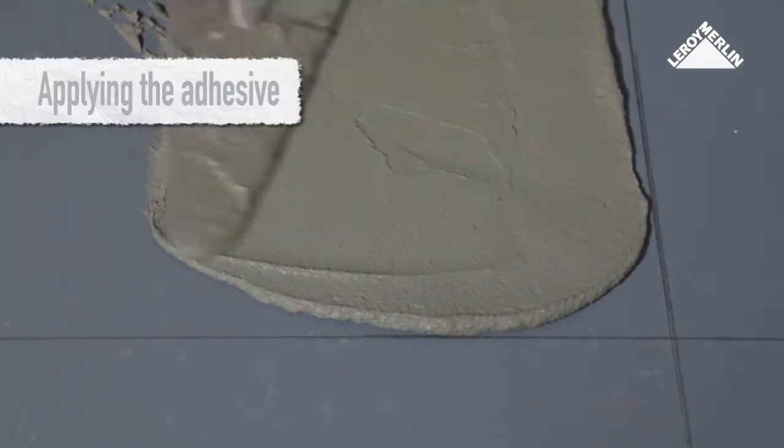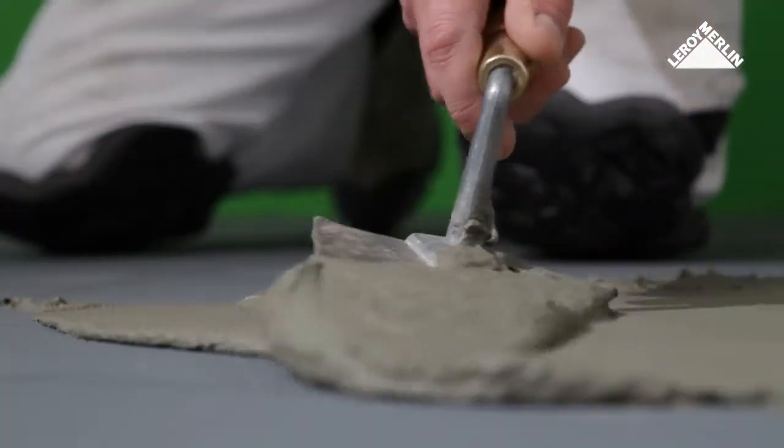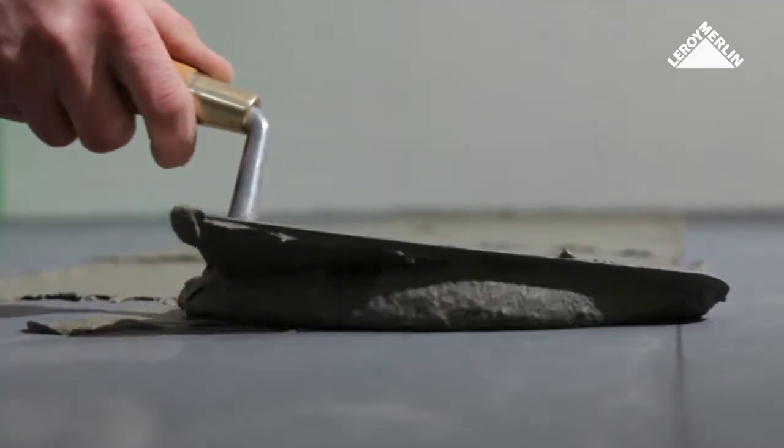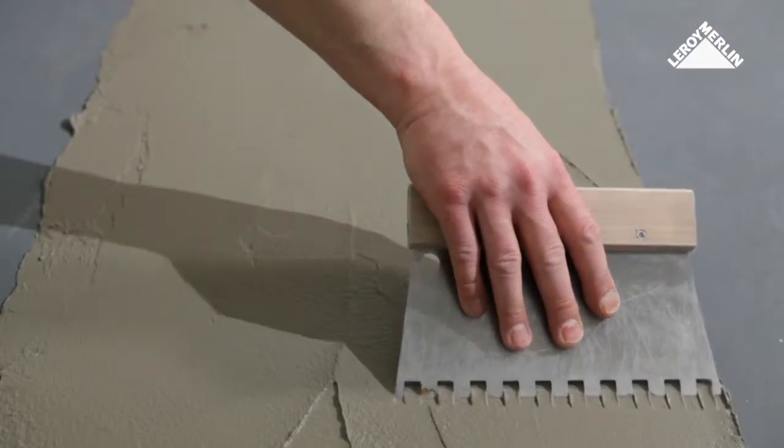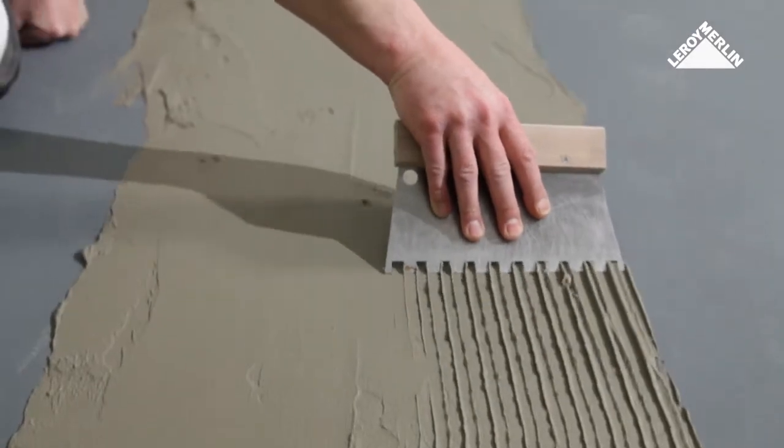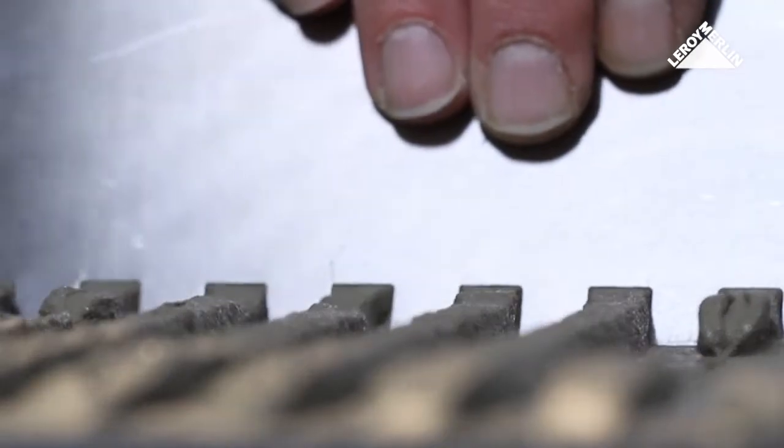Spread the adhesive mortar with the trowel right up to the line over a slightly larger area than the width of the first row of tiles.